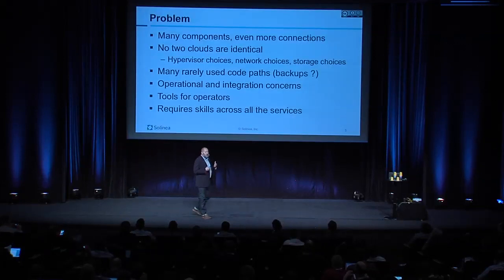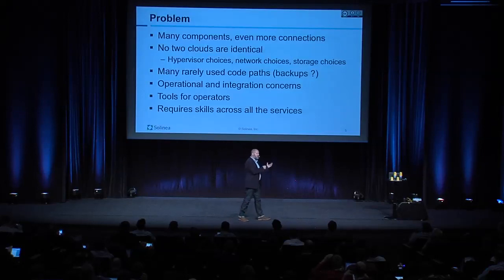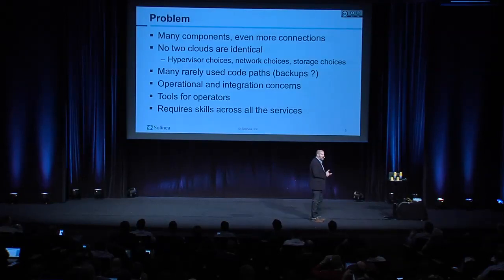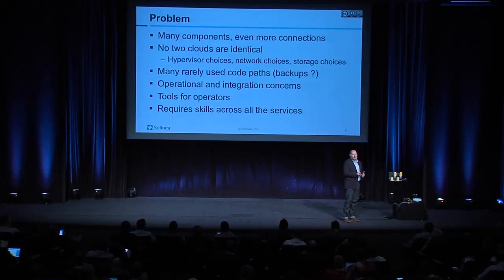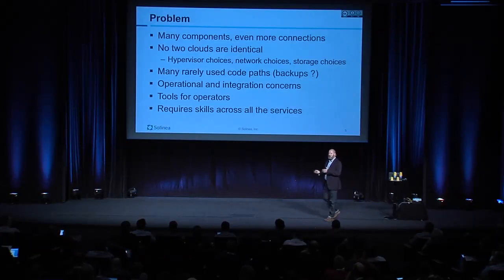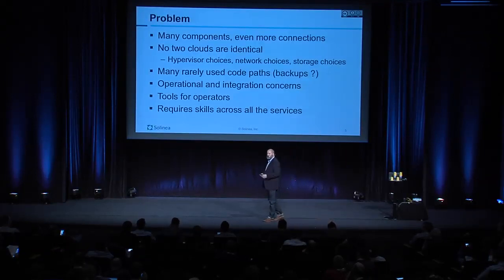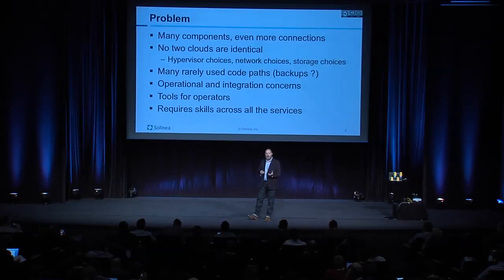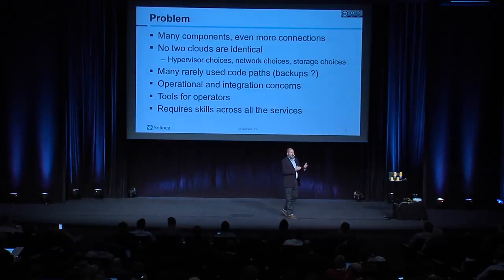Everyone knows there are many components within OpenStack. And there are not only many components within OpenStack, but also third-party components we want to put in our cloud, things like Ceph, which aren't part of OpenStack. Many of the OpenStack components only live to service other OpenStack components — for example, Keystone or Glance. Because of that, there are many interdependencies. You may see failures in Nova, and you're really seeing a Glance or a Keystone issue.